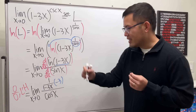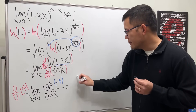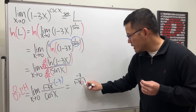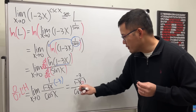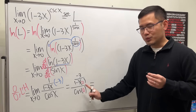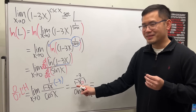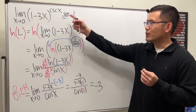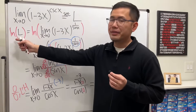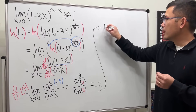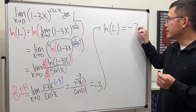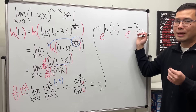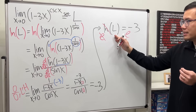Now let's plug in zero. We have negative 3 over (1 minus 3 times 0), all divided by cosine(0). Cosine(0) is 1, and 1 minus 0 is 1, so we end up with negative 3 — a very nice number. But this is not the original limit; this is only ln(L). So ln(L) equals negative 3, and to solve for L we exponentiate both sides: e^(ln L) = e^(-3), so L = e^(-3).